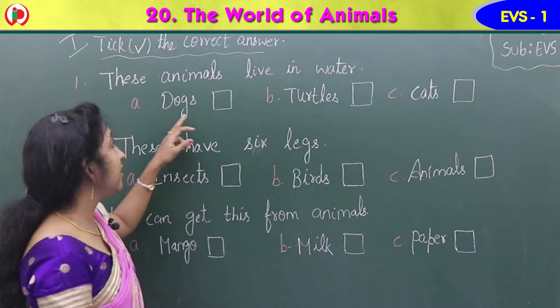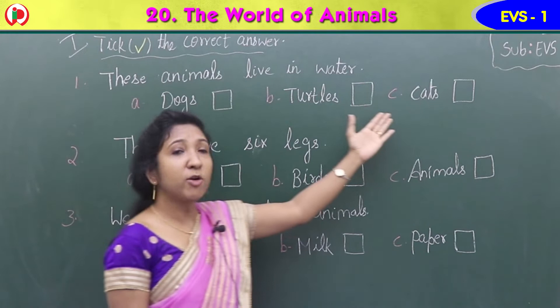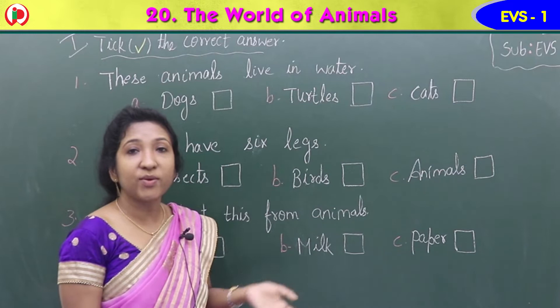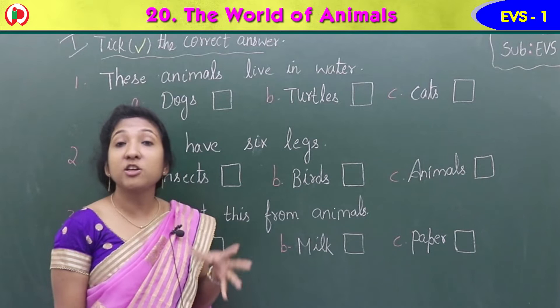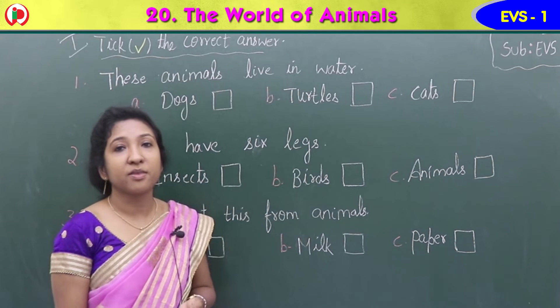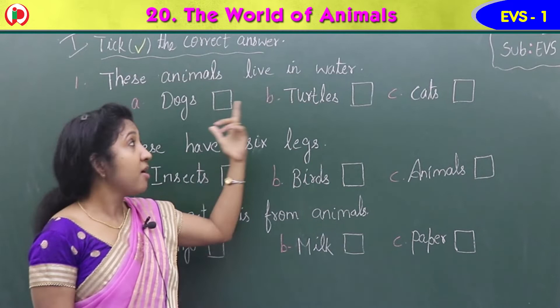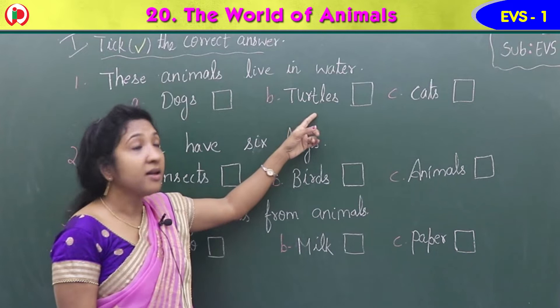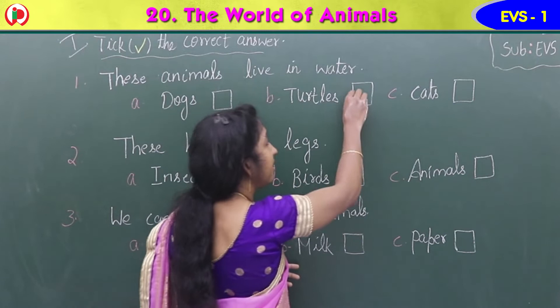Option A: dogs. Option B: turtles. Option C: cats. Dogs live in water? No. Cats? They don't live in water either. Option B: turtles — they look like tortoise, they are a kind of tortoise. Turtles live in water. So option B, turtles, T-U-R-T-L-E-S, is the correct answer. Give it a tick here.